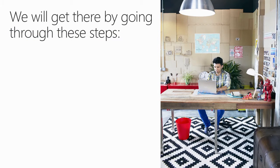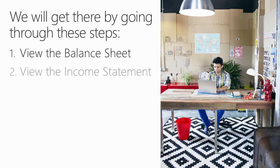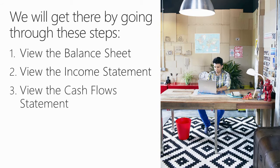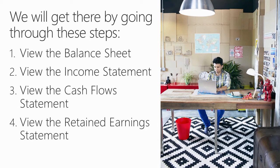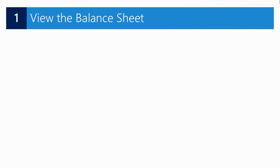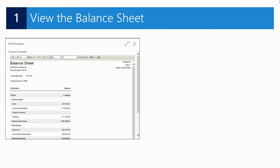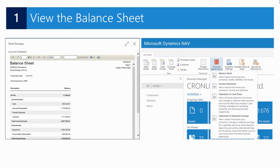We will get there by going through these steps: first we will view the balance sheet, then we will have a look at the income statement, we will run the cash flow statement, and finally we will view the retained earnings statement. Financial reports in Microsoft Dynamics NAV 2017 make financial management of your business easier by providing easy access to commonly used financial statements.